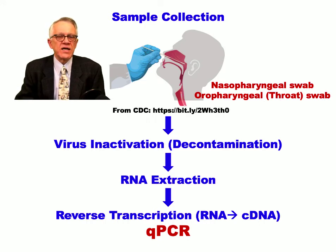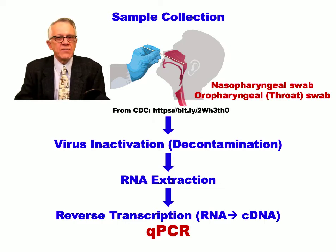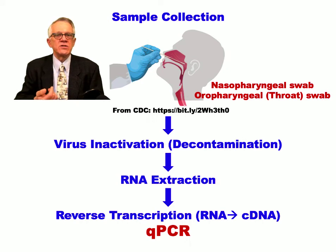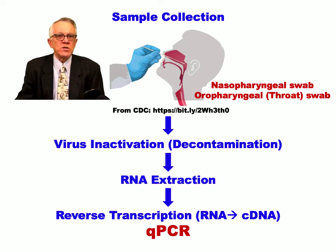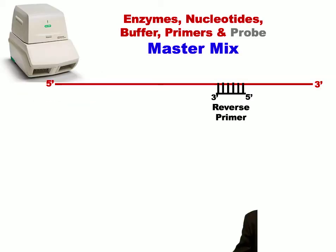In some cases, RNA extraction is bypassed, and then it goes to the next step of reverse transcription — that is, to transform this unstable molecule into the complementary DNA, the cDNA, that's going to be used as the template for the qPCR reaction.